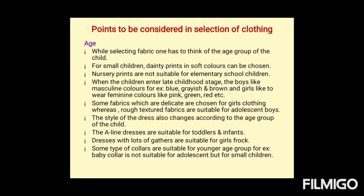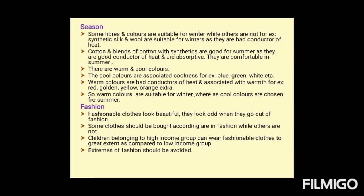Some fabrics which are delicate are chosen for girls' clothing, whereas rough-textured fabrics are suitable for adolescent boys. The style of dress also changes according to the age group. A-line dresses are suitable for toddlers and infants. Dresses with lots of gathers are suitable for girls' frocks. Some types of collars are suitable for younger age groups; for example, a baby collar is not suitable for adolescents but is appropriate for small children.